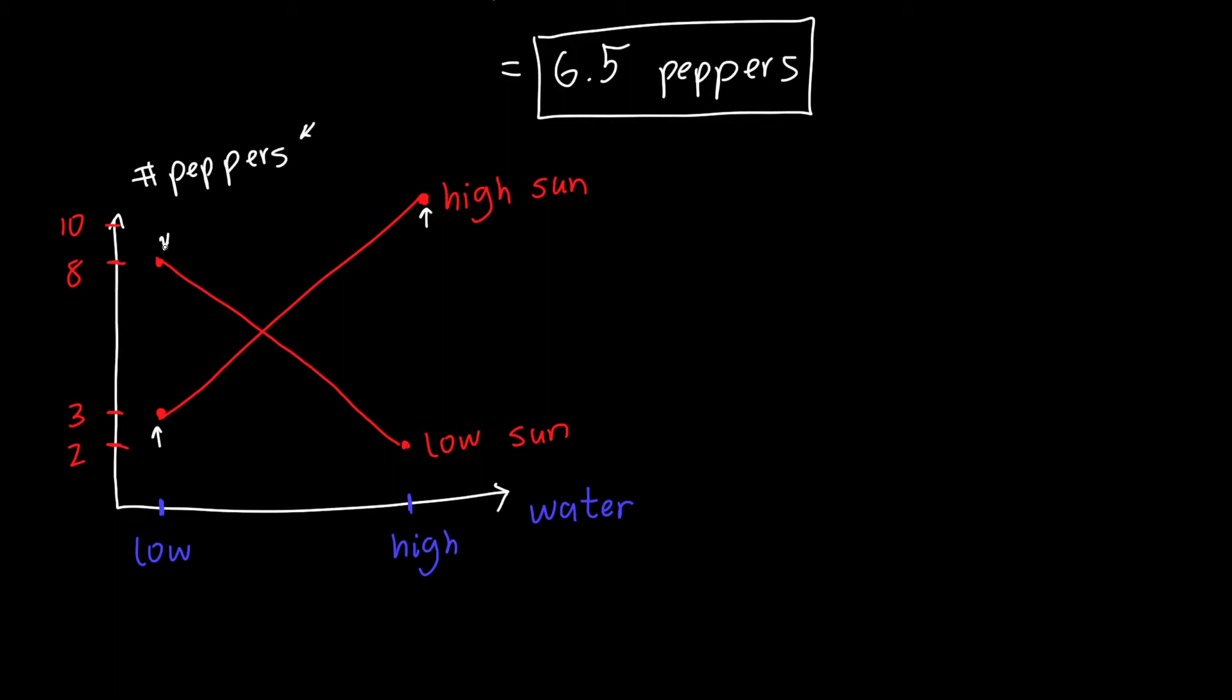When both are low, we get a high response. And when one is low and one is high, we get a low response. And the X could be flipped. So we could go the other direction. But this sort of shape is absolutely classic for a two factor interaction.